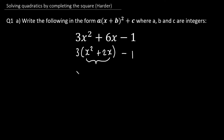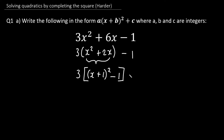I'm going to have a 3 on the outside of a square bracket, then a curved bracket inside — using a square bracket and a curved bracket just to distinguish them. Completing the square on x² + 2x gives us (x + 1)², since we take half of 2 which is 1. We then subtract that number squared — 1 squared is 1 — and close the square bracket, then bring down the − 1.